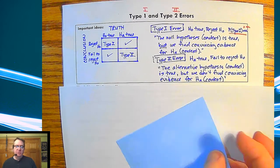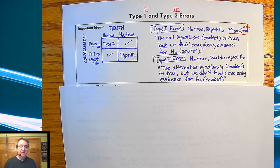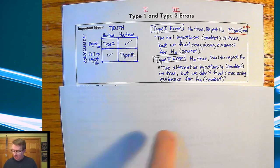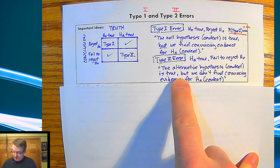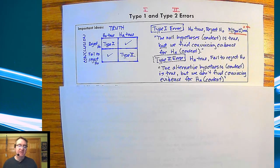The other one is a Type II error where the alternative hypothesis is true, but we don't have enough evidence to say that what the norm is—the null hypothesis—we should reject it. So we fail to reject the null hypothesis. The alternative hypothesis in context is true, but we don't find convincing evidence for the alternative hypothesis.